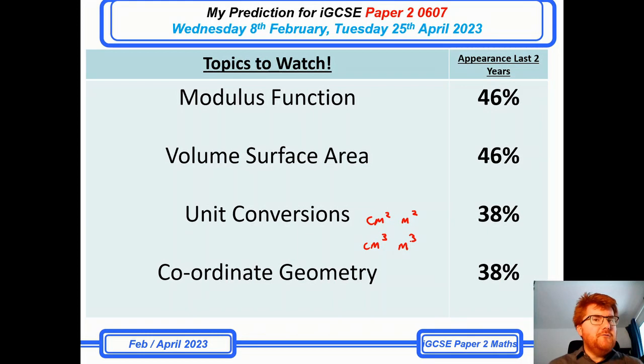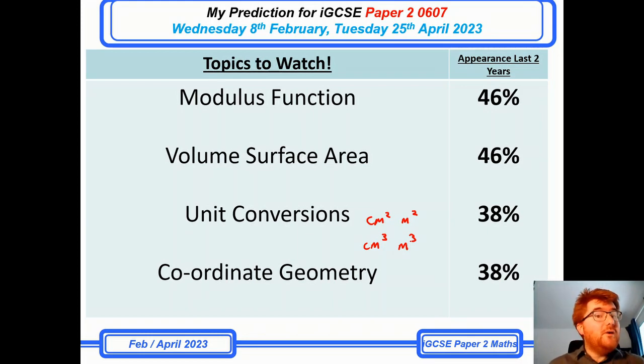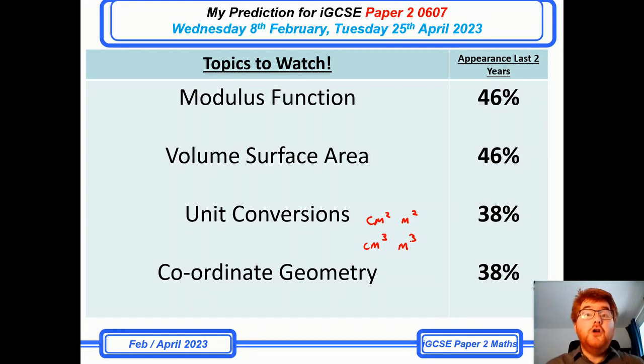Coordinate geometry is slightly lower at 38%, but when a question does appear it can be a very big question, and often that is going to involve perpendicular bisectors.